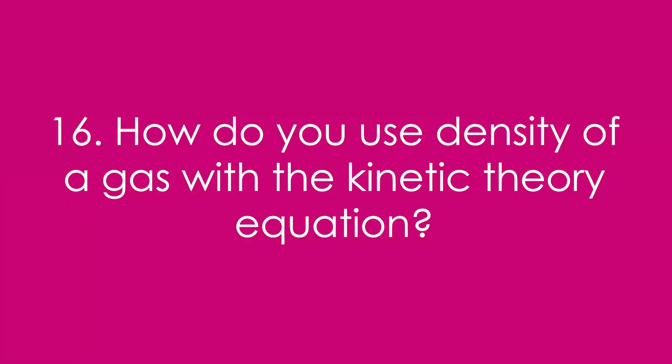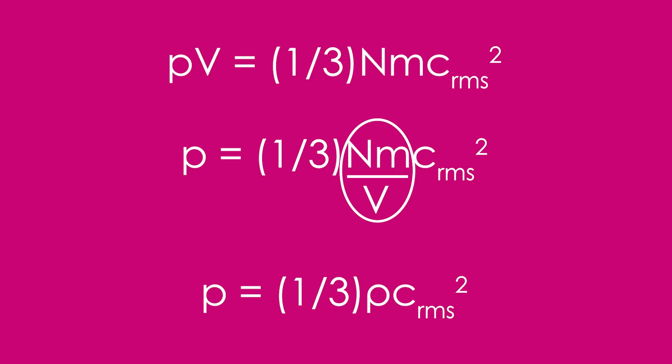Question 16: How do you use density of a gas with the kinetic theory equation? Taking V to the other side gives NM over V, which is total mass of the gas divided by volume — that is density.